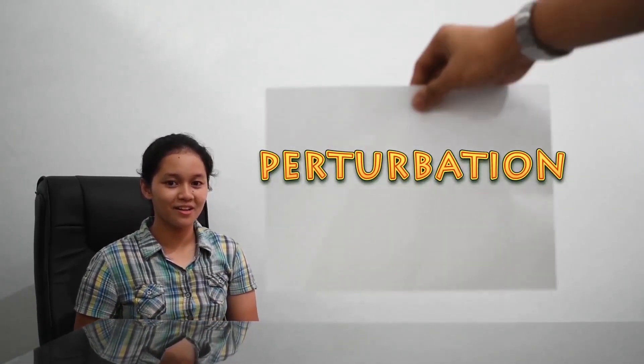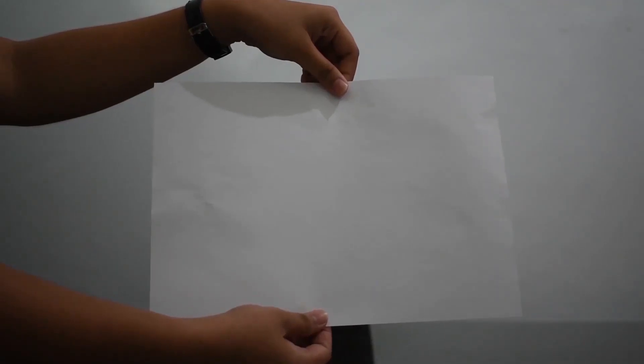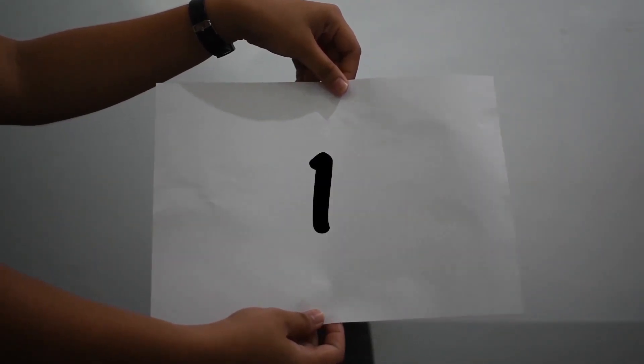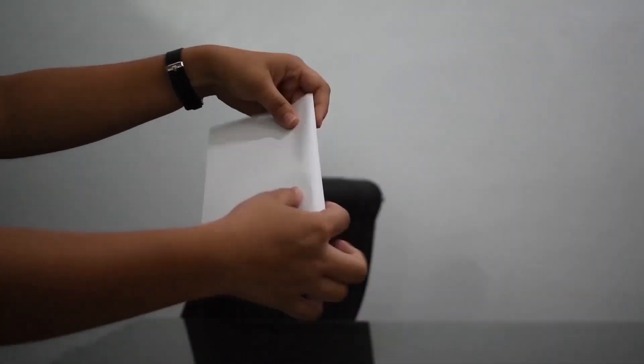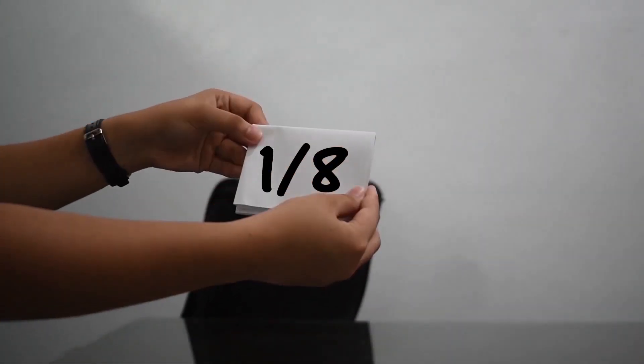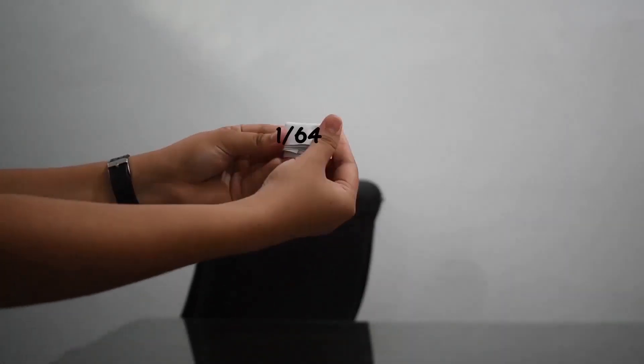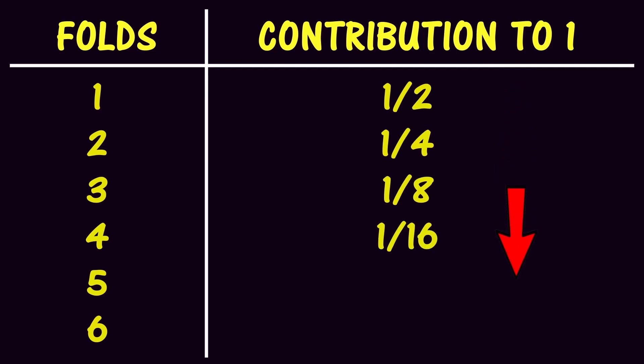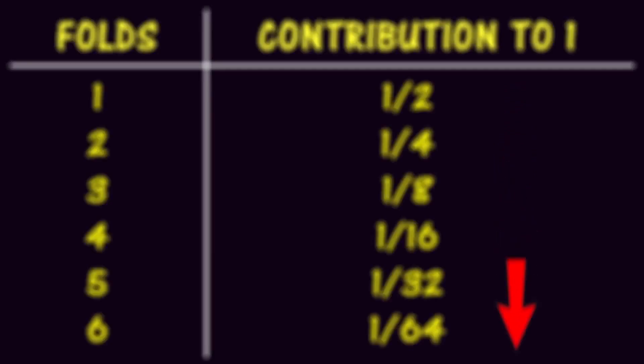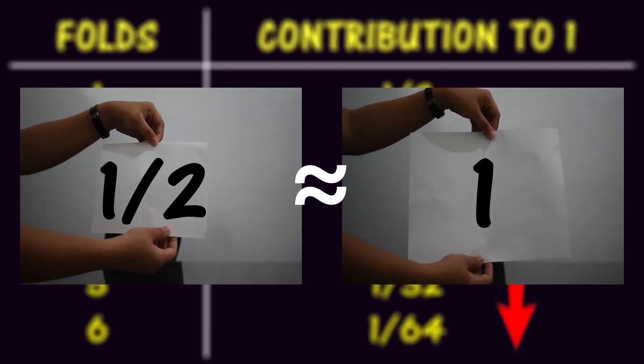And let's use this paper as an analogy. Suppose that I put a value of this whole paper as 1. Folding it once becomes 1 half, twice becomes 1 fourth, and so on. But as we go on to fold it many times, the number contributes less to the value of the whole paper. So, 1 half becomes the best approximate to 1.